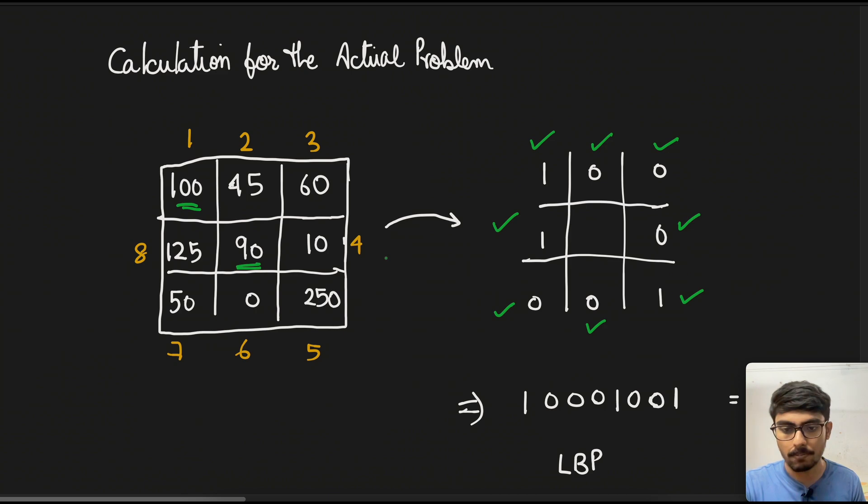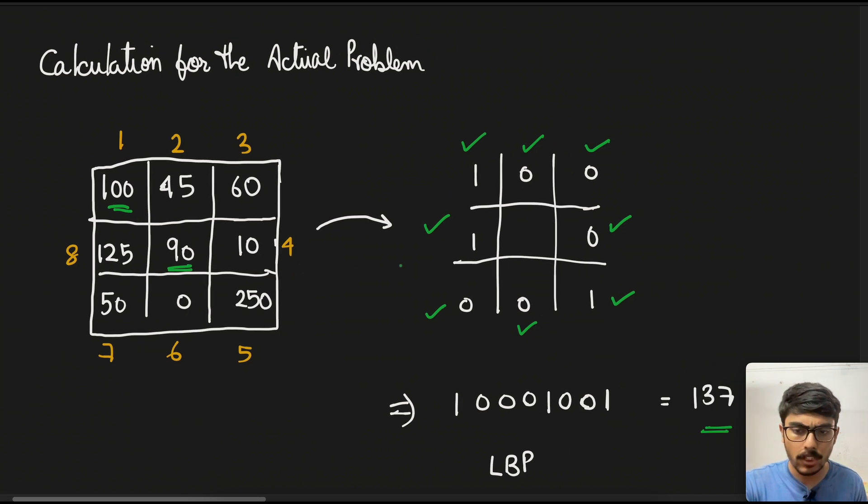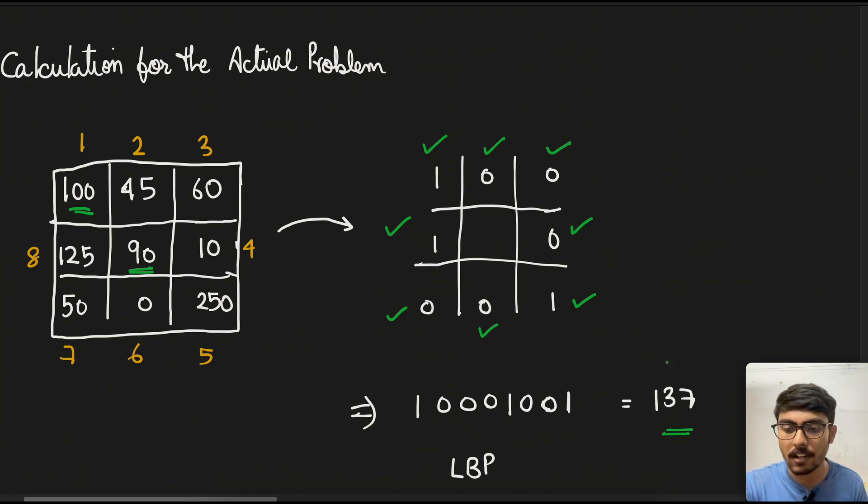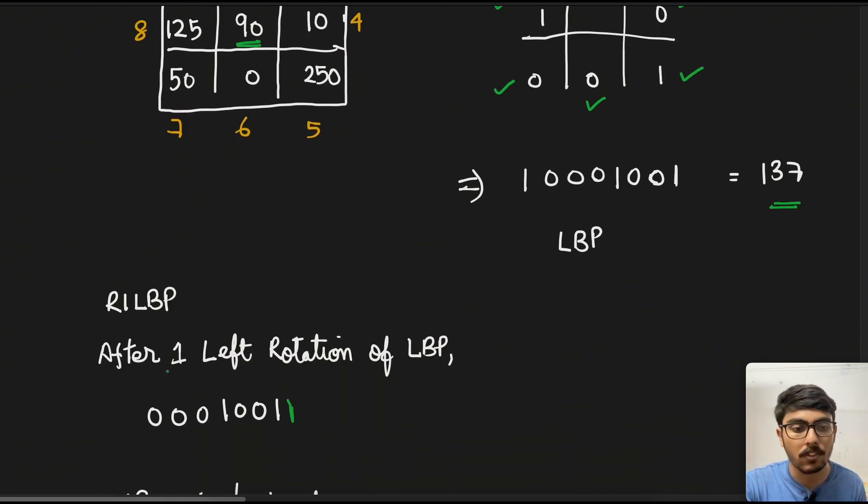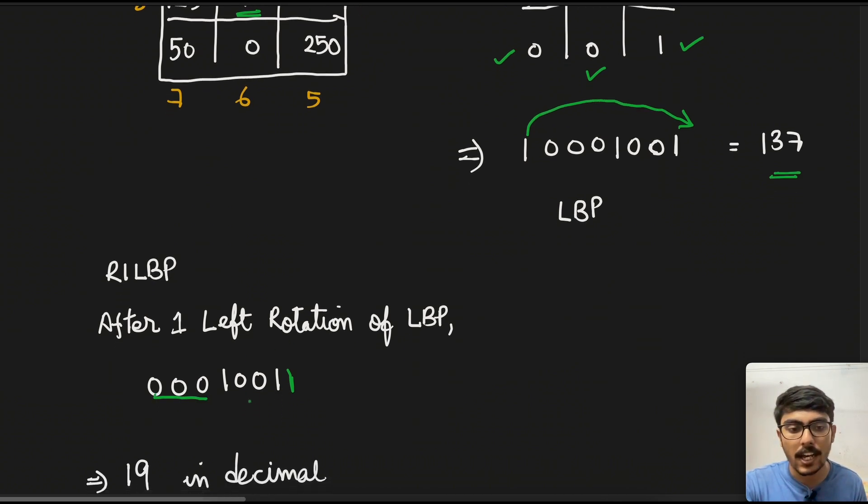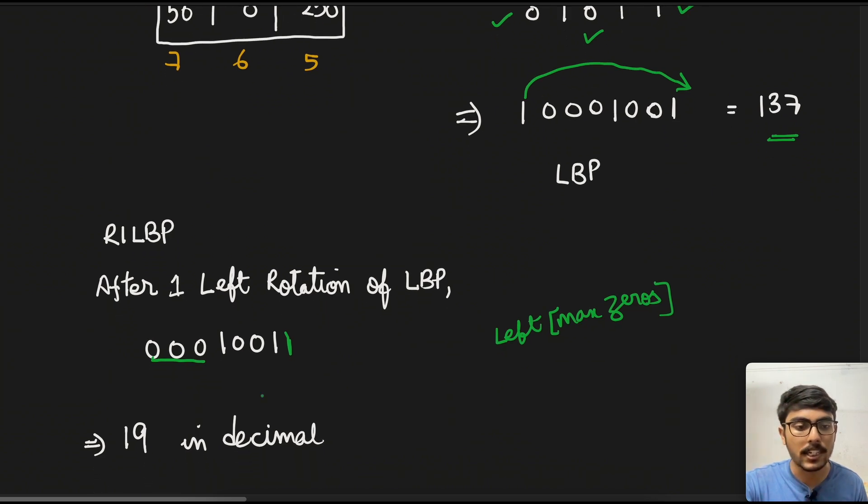Now, as I know that RILBP is going to be the minimum of all the LBPs, obviously we can check that the value that we get after our left rotations has to be less than 137 or equal to 137. First thing what we did is the first left rotation. This one will go here. If we bring that one here, then you see that three zeros are in front, and then we have 1, 0, 0, 1, 1. That comes out to be 19 in decimal. What I will suggest is when you are doing left rotation, try to create the maximum number of zeros towards the left hand side. That's how you can be assured that this is now the place where I need to stop the left rotation, and this is basically the RILBP part.